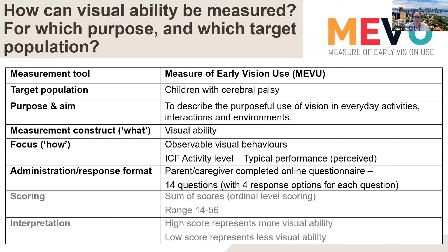The Measure of Early Vision Use has been developed and validated for children with cerebral palsy up to the age of 12 years. Testing suggests it will be most useful for young children or children where there is a concern about how vision is used. ME-VIEW aims to describe purposeful use of vision, with a focus on observable visual behaviours and typical performance — not best performance. ME-VIEW is a 14-item parent-rated questionnaire, where each item is a question with four response options.